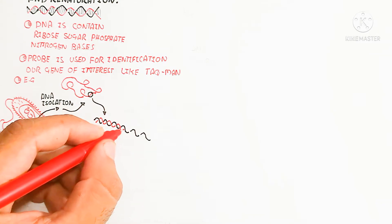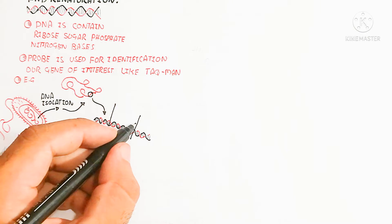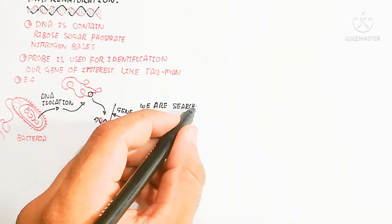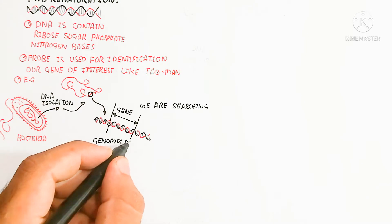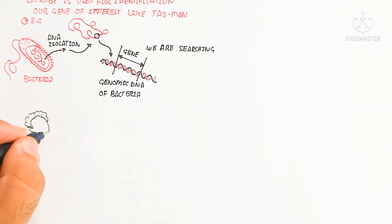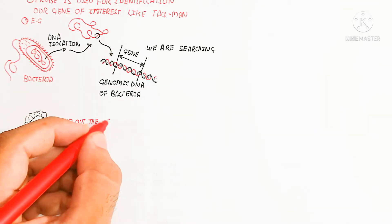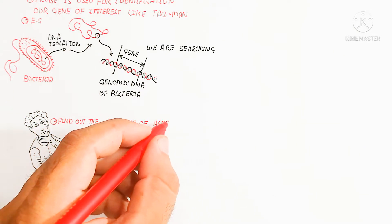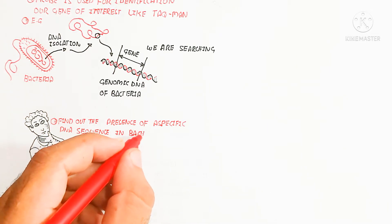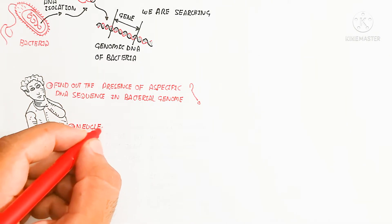When we isolate the genome, it contains many different genes. The whole genome contains our target genes, but we need to determine whether a certain gene is present or not. We use a probe to detect whether that specific gene is present in the bacterial genome.